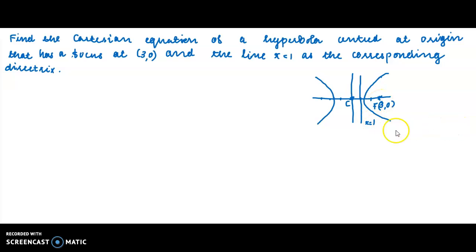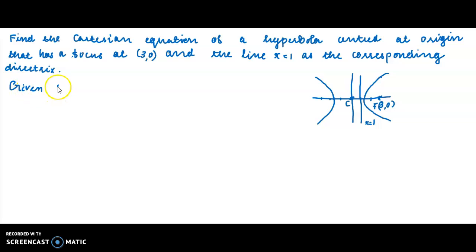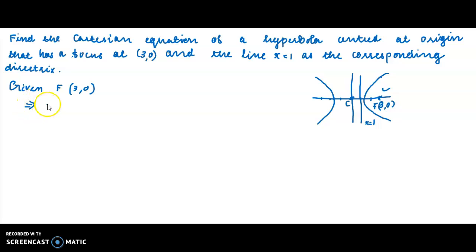Now we can find the eccentricity of the hyperbola. The focus is given as (3, 0). For a standard hyperbola, the focus is at (±c, 0), and here the focus is at (3, 0), so c = 3.